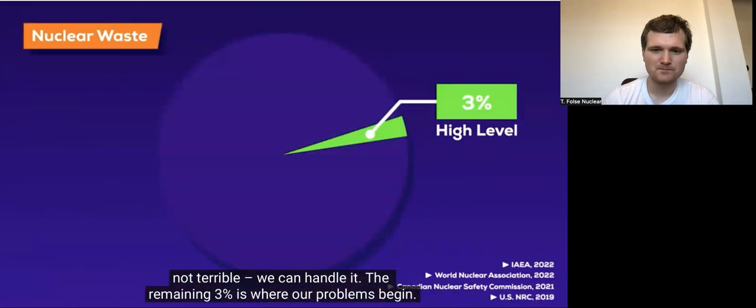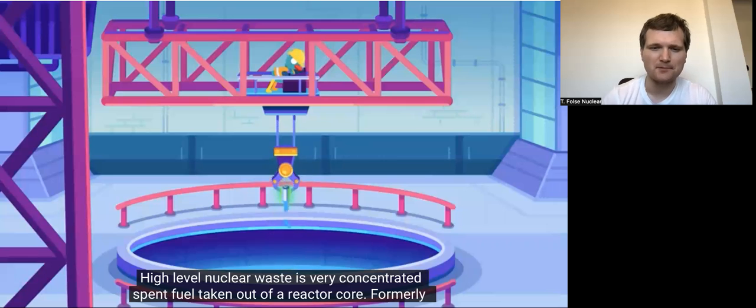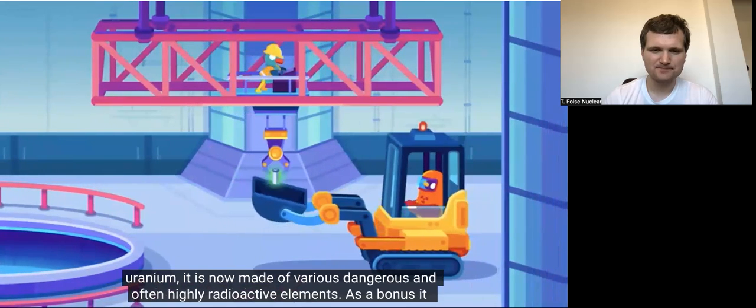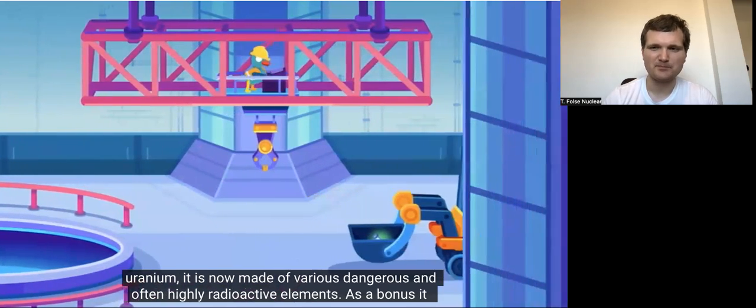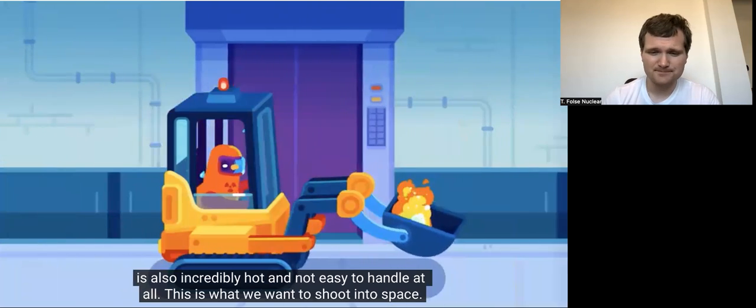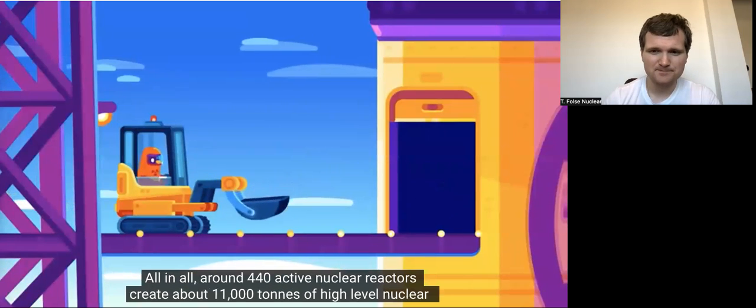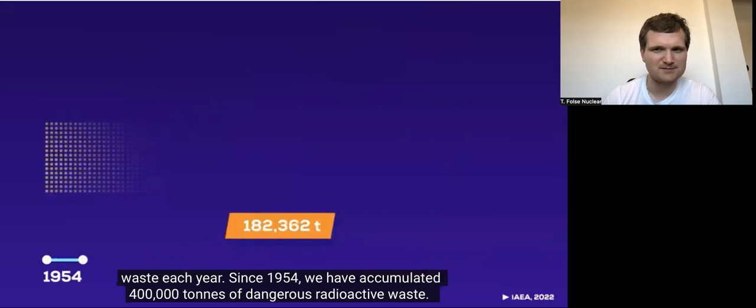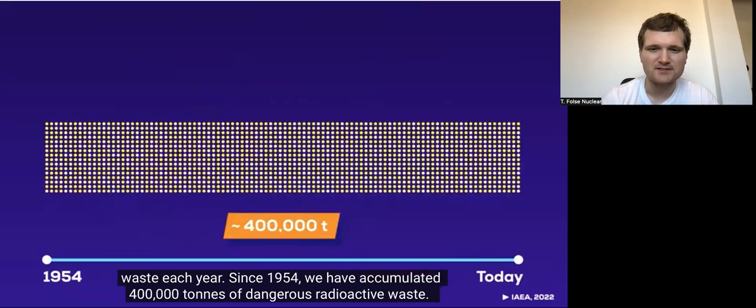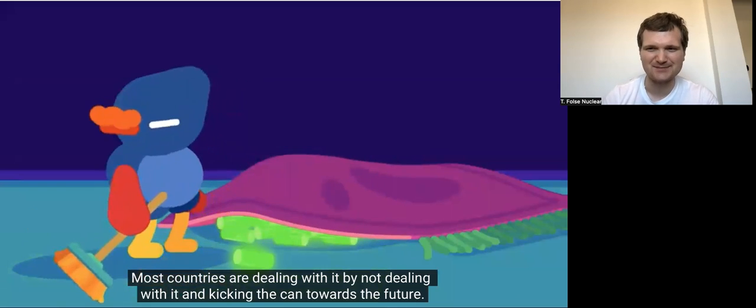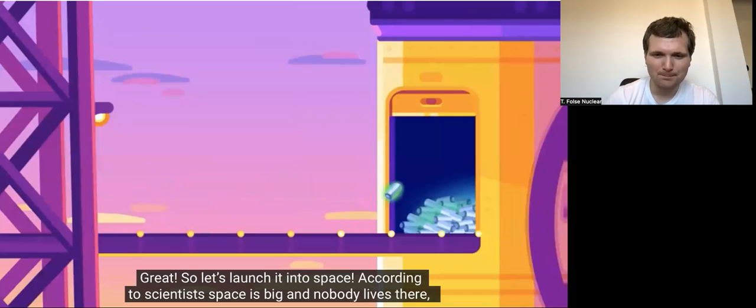The remaining 3% is where our problems begin. Why did they show their sources? Those are all very reasonable. Nuclear waste is very concentrated spent fuel taken out of a reactor core. Formerly uranium, it's now made of various dangerous and often highly radioactive elements. I'm into the cores, it's actually going to be blue at any time. As a bonus, it's also incredibly hot and not easy to handle at all. This is what we want to shoot into space. All in all, around 440 active nuclear reactors create about 11,000 tons of high-level nuclear waste each year. Again with the green dome and the hyperbolic cooling tower. Since 1954, we've accumulated 400,000 tons of dangerous radioactive waste. Most countries are dealing with it by kicking the can towards the future. Great. So let's launch it into space.